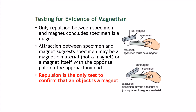Let's test for evidence of magnetism. Say I have an object — some kind of block — and I don't know what it is. I don't know whether it's a magnet, not a magnet, or a magnetic material that has not yet been made into a magnet. How do I test this? When I bring this specimen close to the magnet, there can be three reactions.